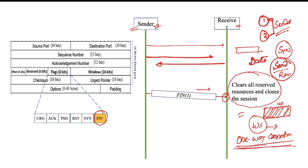Once data transmission is over, the next phase of TCP is connection teardown or closing the connection. In this phase, once the data is completed, the sender prepares one segment where the FIN bit is set to 1 and communicates it to the receiver. Once the receiver receives this FIN segment, it prepares for connection termination — it removes all the buffer from its memory that was established to accept data, removes the window size and all other relevant connection information, and then closes the session.